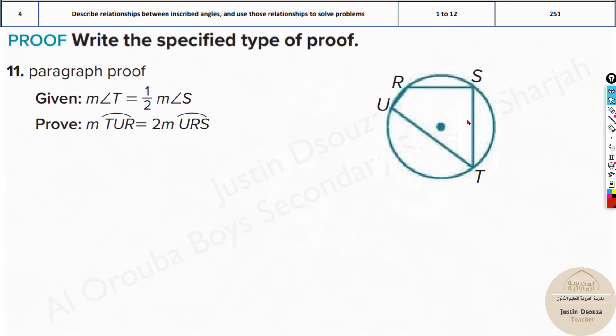Now we have paragraph proofs. This is an MCQ part. Your questions must be in MCQs. You will have options. But anyways we will go through this. They have given us measure of angle T is half of measure of angle S.